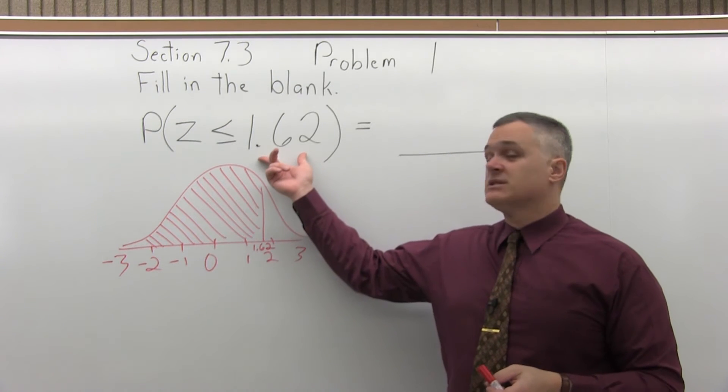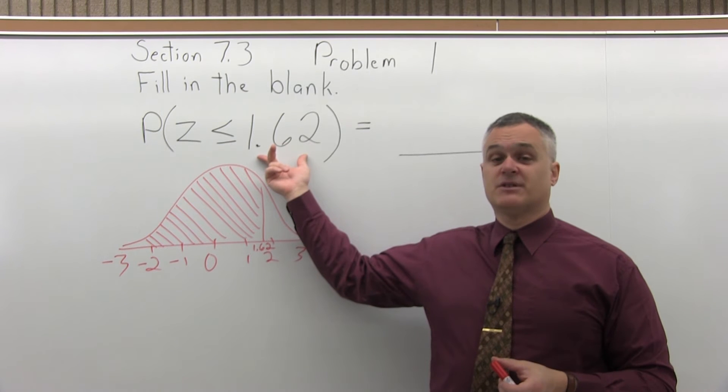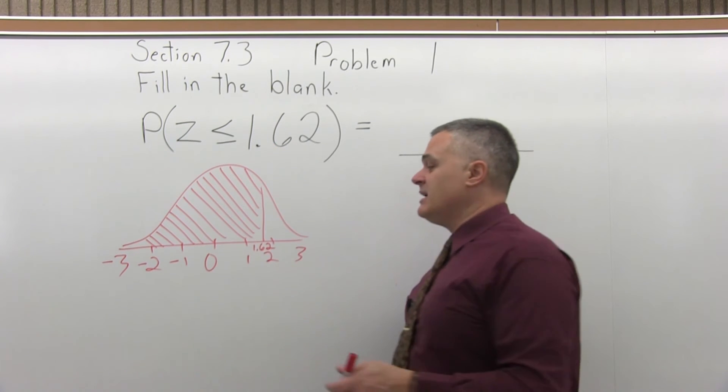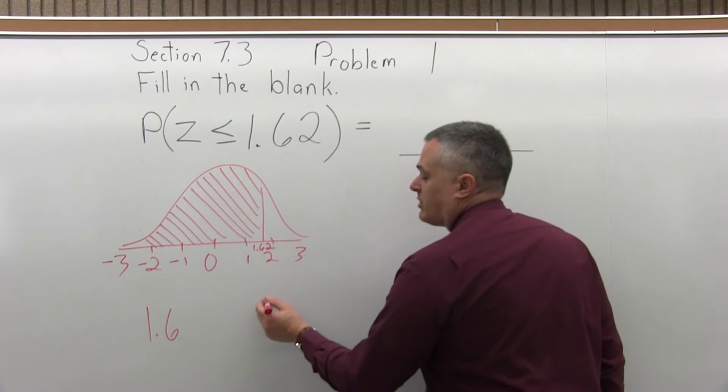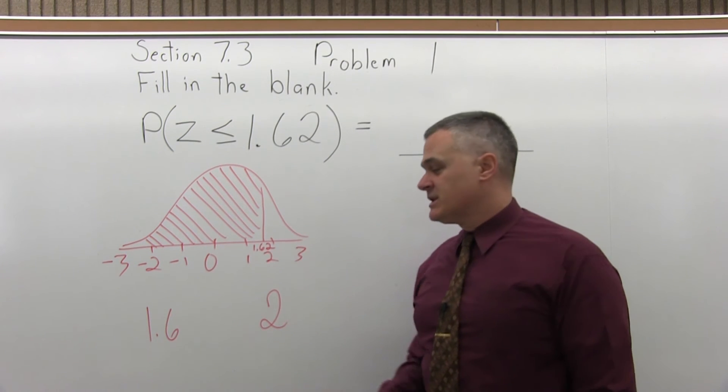So to look up 1.62, step 1, you want to write the number to look up so that it has two places after the decimal, which we already have. Step 2 is split the number into two parts by pulling off the rightmost digit, which is the 2. So I pull it off. I have two separate numbers now.